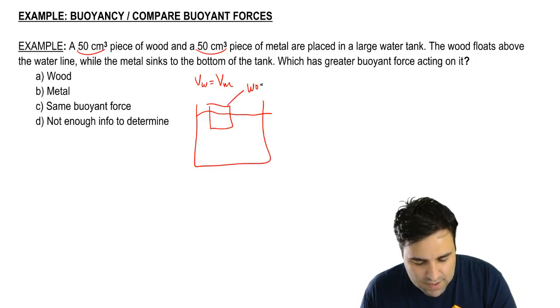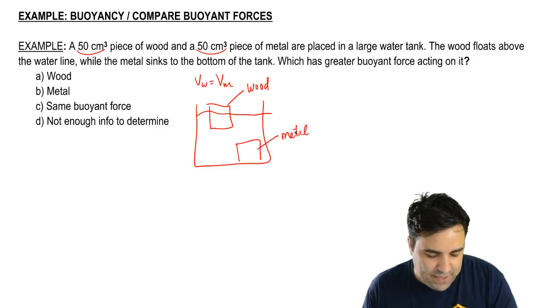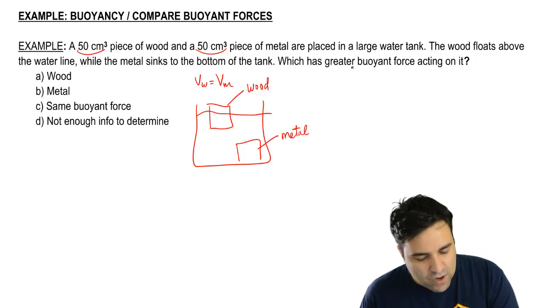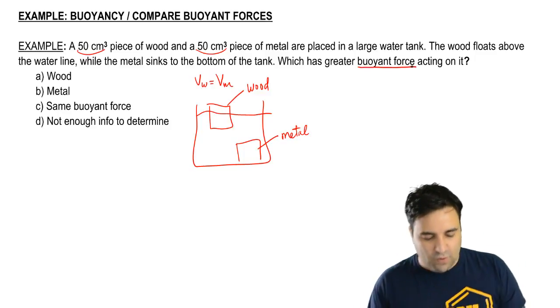Let me draw the wood over here and the metal sinks to the bottom, and that's what you would expect. Wood almost always floats and metal almost always sinks, and we want to know which has the greater buoyant force on it.